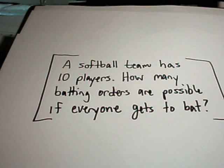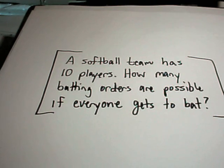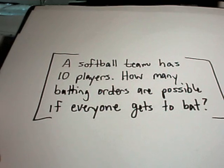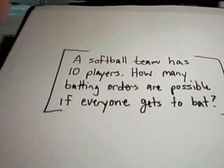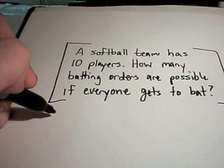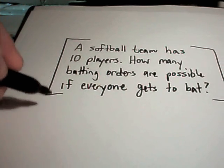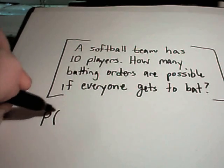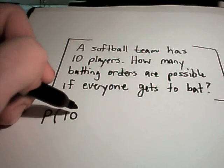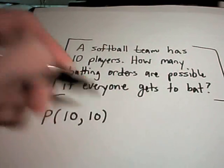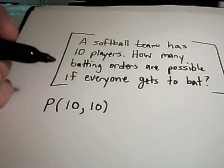And the order matters because it's going to be a different ordering. So maybe I go first, you go second. That's a different ordering than if you go second and I go first. They'd probably put me last. I think they tend to put the bad people at the tail end, so that would definitely be a different ordering than if I was going first. So in this case, we're sampling without replacement, the order does matter. There's 10 objects to choose from, but I'm going to choose all 10 objects in this case. Everybody gets to bat.